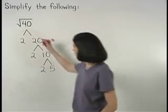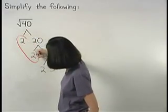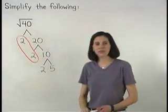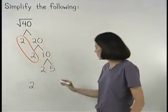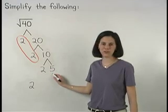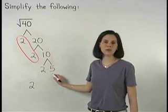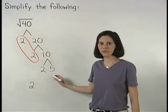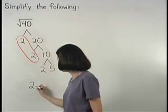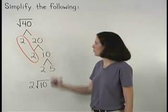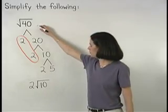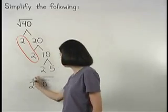So we have a pair of 2s, which means that a 2 can come out of the radical, and we have a 2 and a 5 that don't pair up, which means that a 2 and a 5 stay inside the radical, multiplying together to make 10. So the square root of 40 simplifies to 2 root 10.